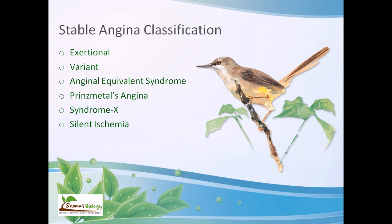Silent ischemia is very common but difficult to diagnose. A Holter monitor and exercise testing are used to detect it, and more episodes of silent ischemia than painful ischemia can be found repeatedly in the same patient. Symptoms include chest pain, pain radiating to the arms, and dysfunction in heart pumping — all occurring silently without obvious warning. These are the classifications of angina.